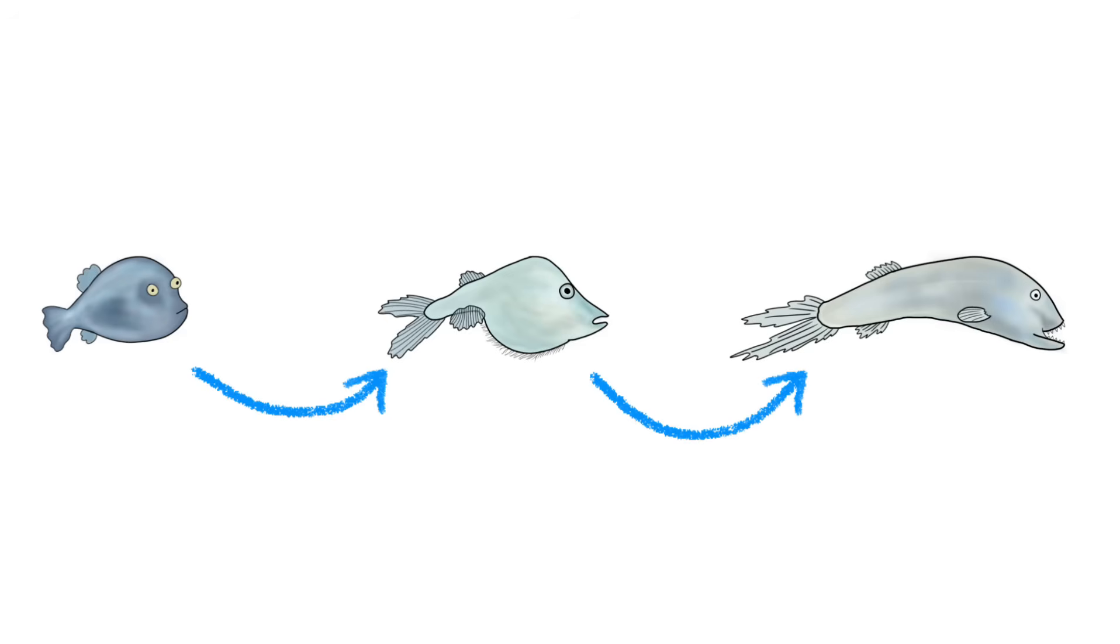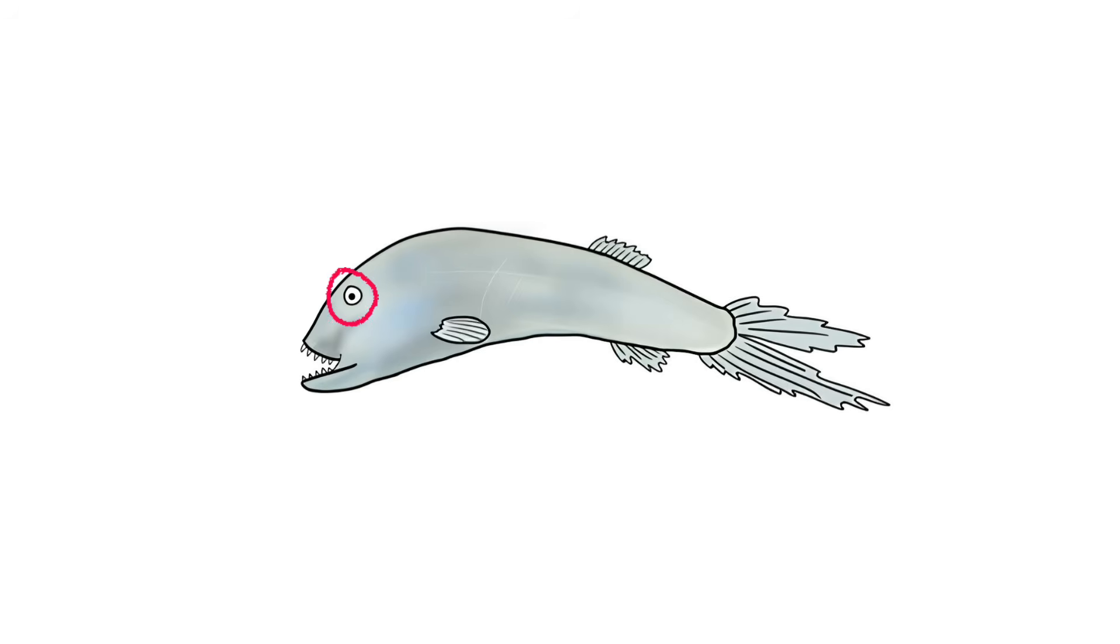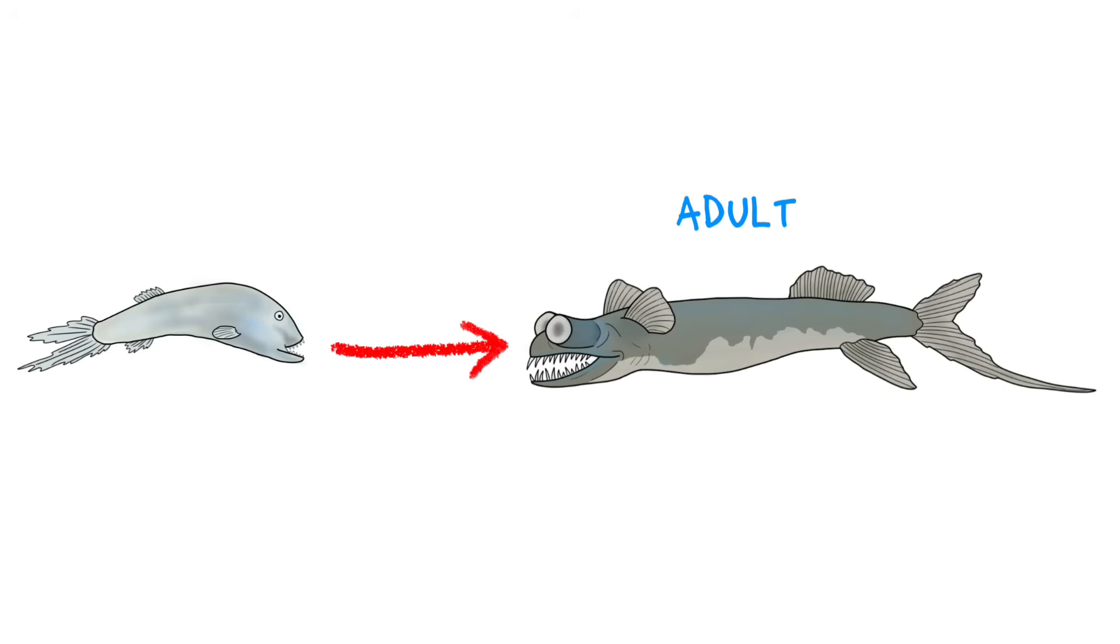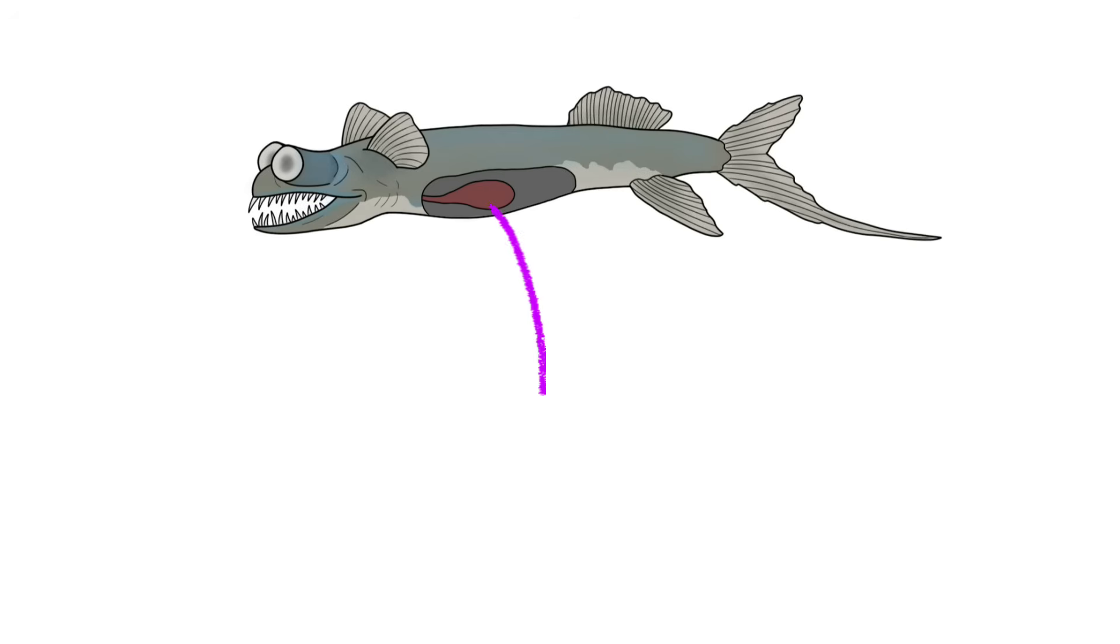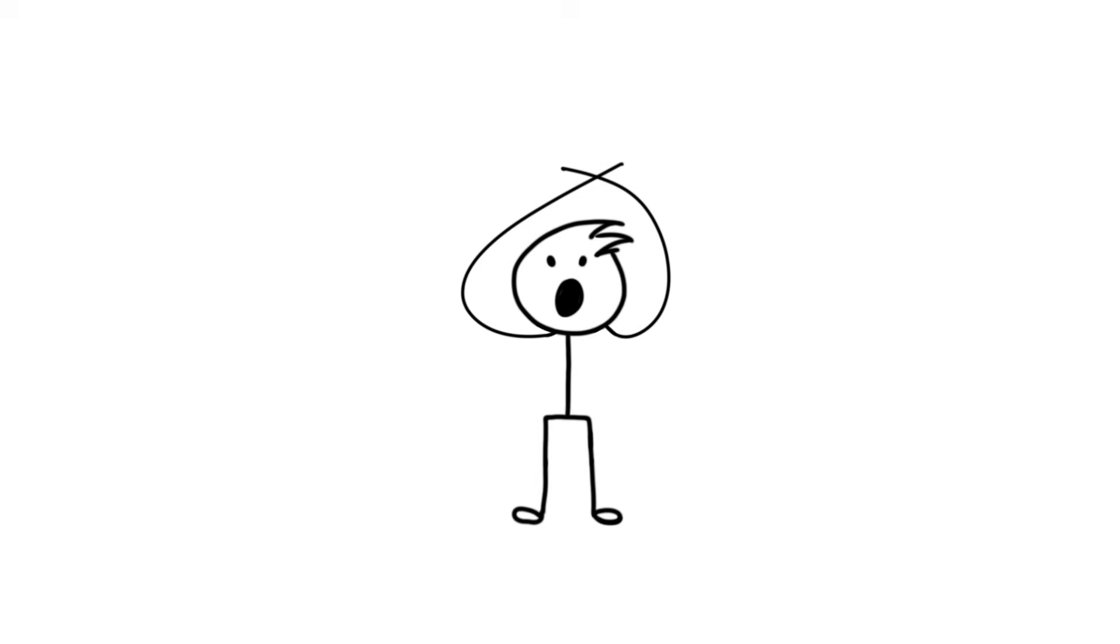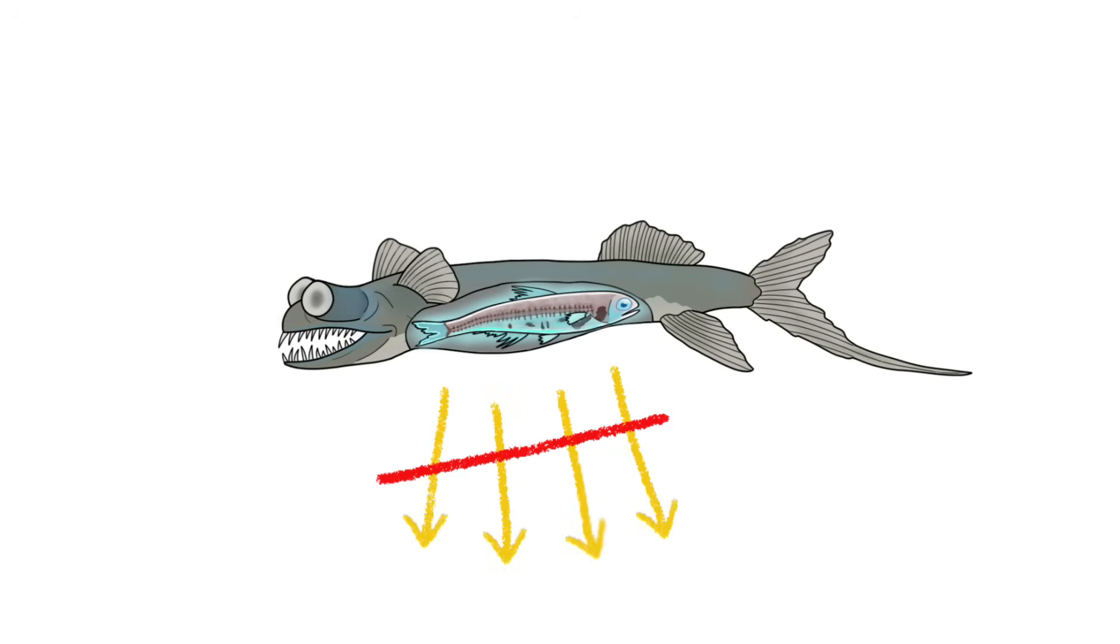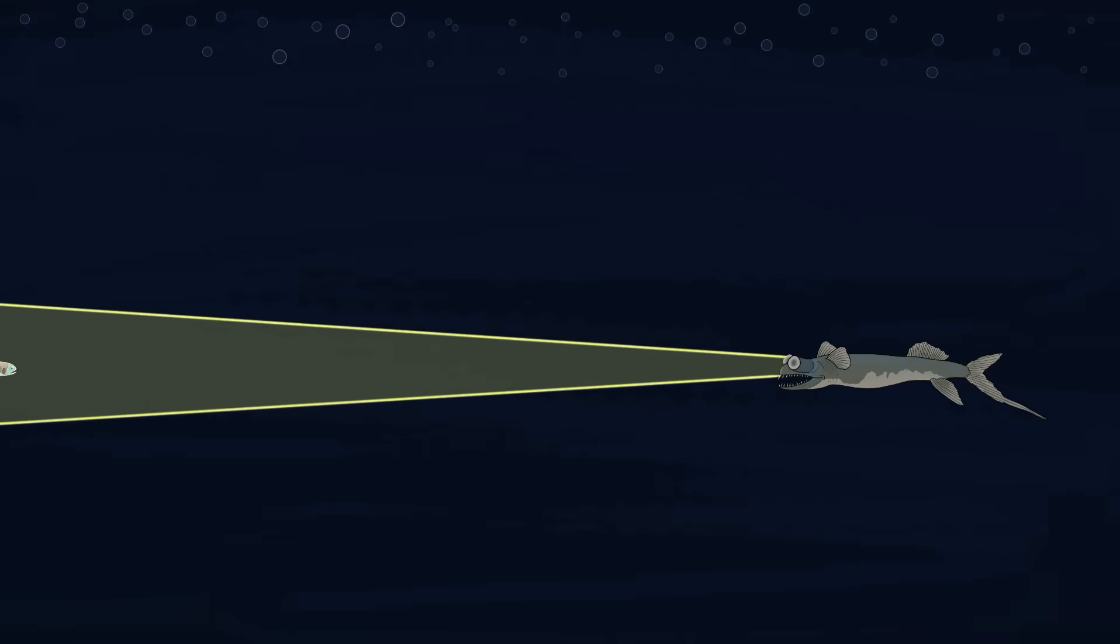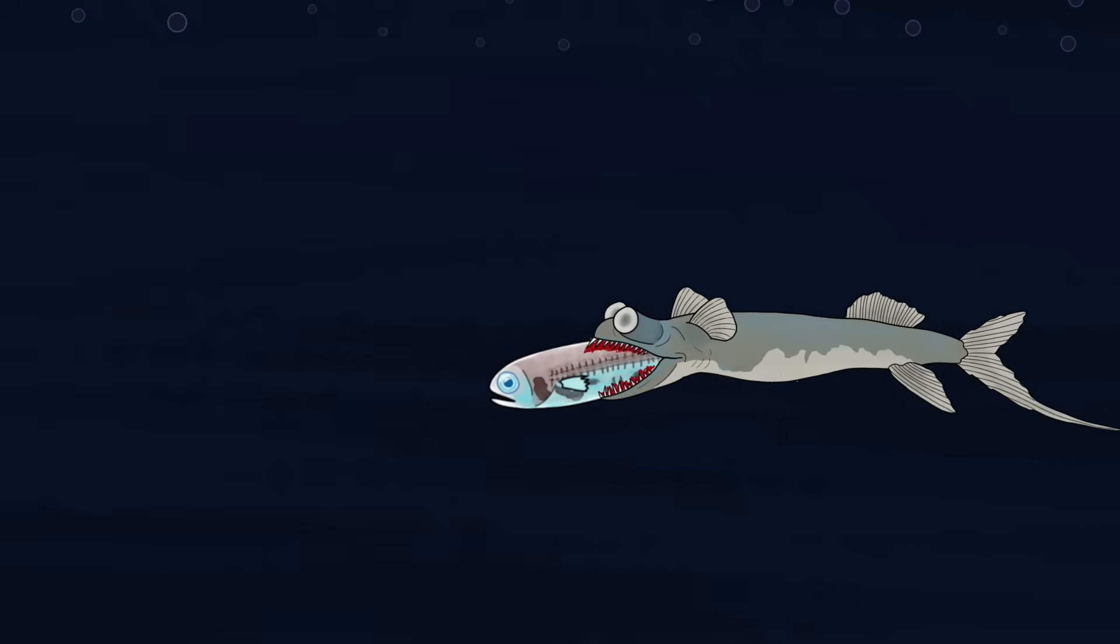When it reaches juvenile stage, eyes start shifting towards the front, and many bones start to degenerate. Sharp fangs start to form and it starts traveling towards the depth. When it reaches adult stage, eyes become tubular. The fangs grow more robust with needle-like teeth. Body becomes slender, scaleless, and expandable like balloon. And the inner lining of stomach turns black to prevent the light of glowing prey from escaping the stomach. The eyes can see in almost zero light condition with super-depth precision and can see bioluminescent animals from a mile away.